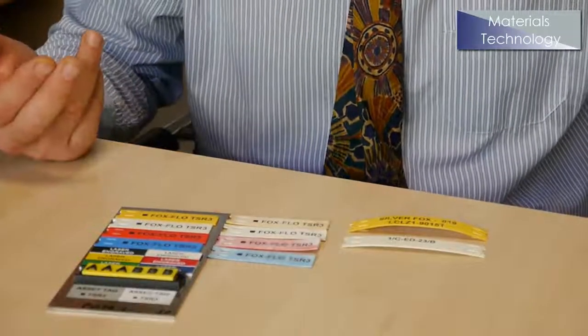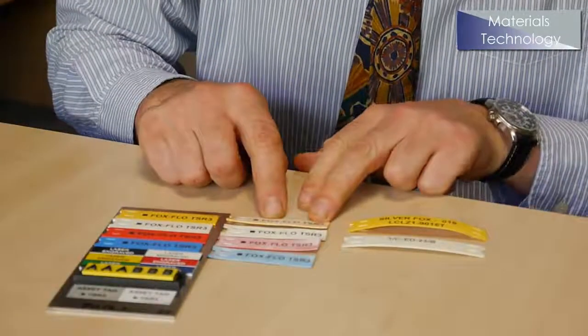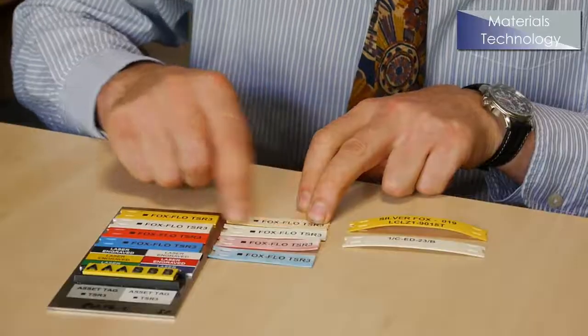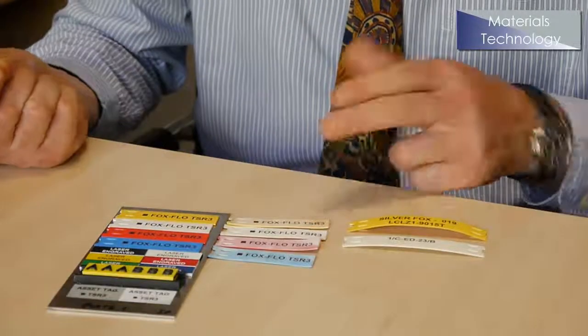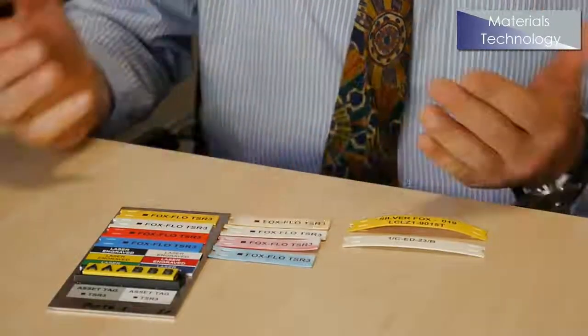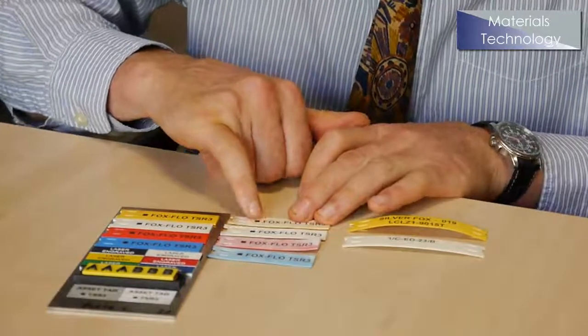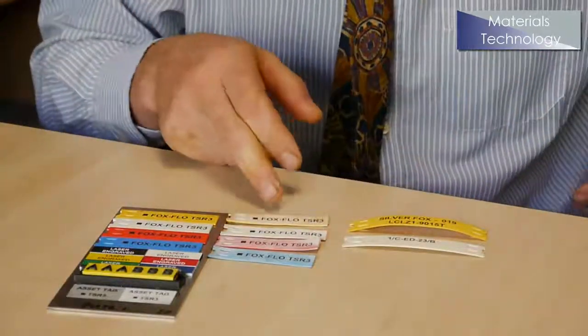As you can see, the color has faded. Print is still readily legible, and you can't remove it. There's a degree of chalking on the surface. This can be removed with a finger, for example.